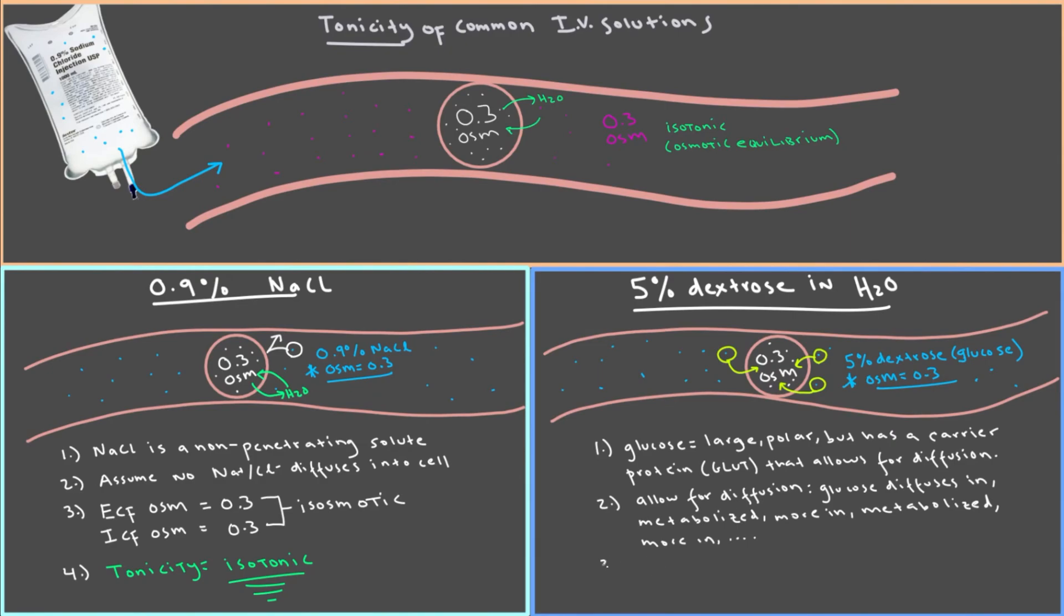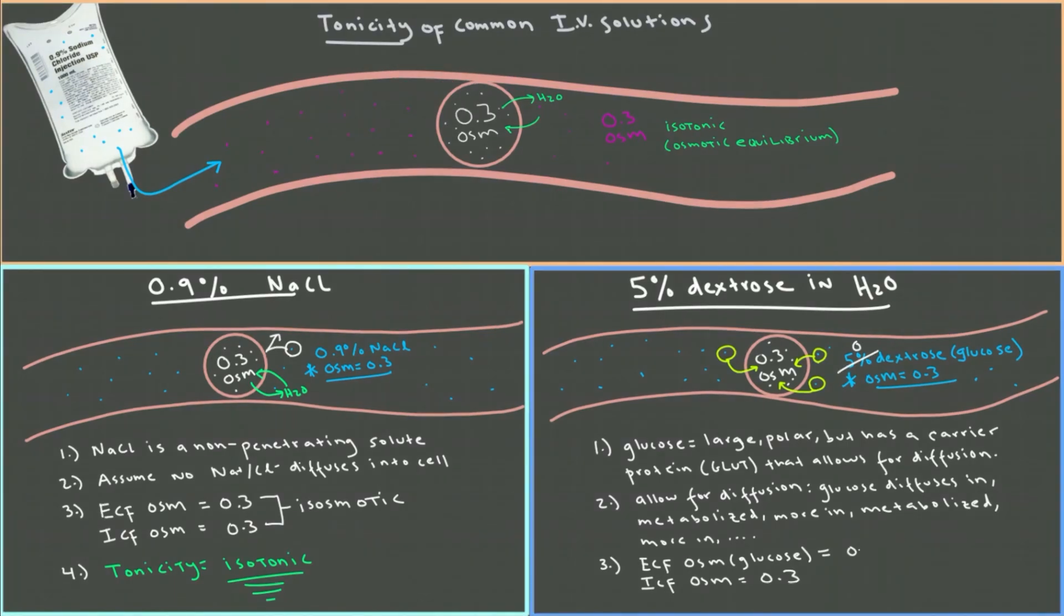That means that the concentration of glucose outside the cell, so the osmolality of glucose in the ECF, will over time become zero because all of that glucose went in and got broken down and metabolized. If we look at the concentration of solute on the inside, that was still 0.3 because all of the glucose that entered was metabolized. So that means that the extracellular fluid became hypoosmotic, has a much lower osmolarity compared to the cell.